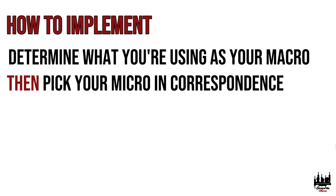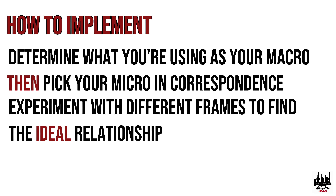Let's say your higher timeframe of preference is the daily. You start looking at the four hours and the one hour to see what works best for your eyes as an individual trader. A lot of it depends on personality. If you're impatient, you would go with a lower macro — maybe a four-hour macro and a five-minute micro. If you're a patient trader, you might go with a weekly macro and an eight-hour micro. That's why you want to go through charts, determine your macro, then slowly experiment to find your micro.